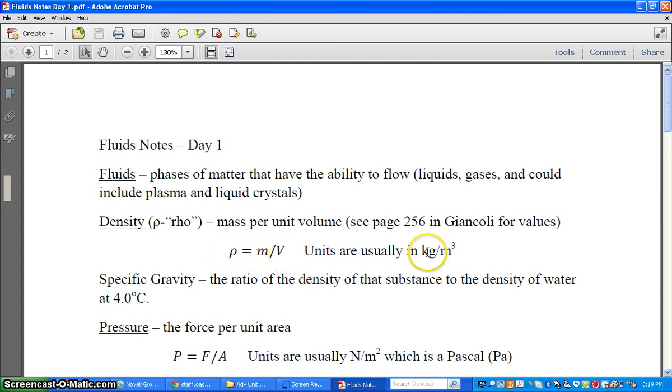But basic equation then is rho is equal to mass over volume. Generally in physics, we're going to use kilograms per meters cubed. Now that means, in chemistry, you usually use grams per milliliter or grams per centimeter cubed. And here we're going to use kilograms per meters cubed. So just be aware of that. So some of the values are going to seem a little odd.